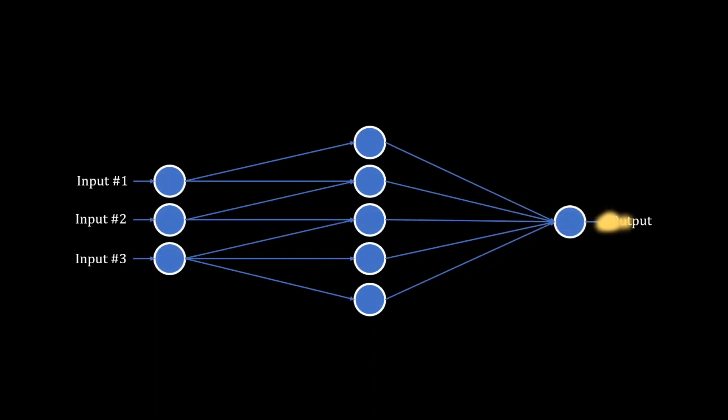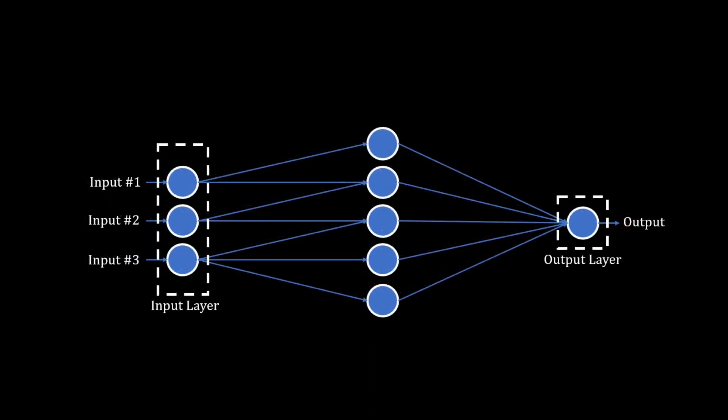We typically call the first and last layer the input and output layer respectively, and the hidden layers are in between.